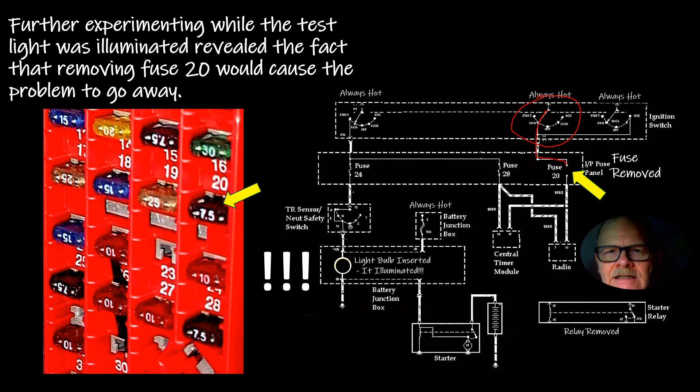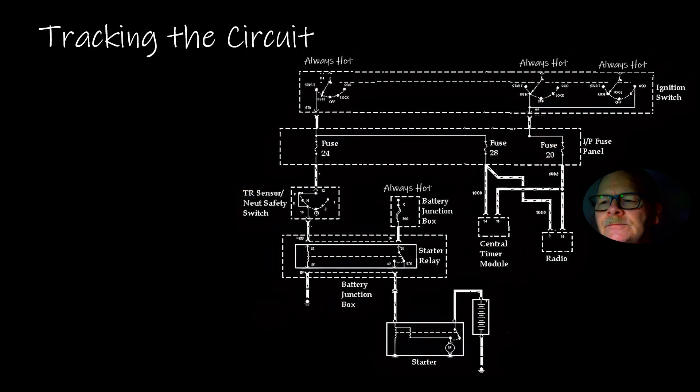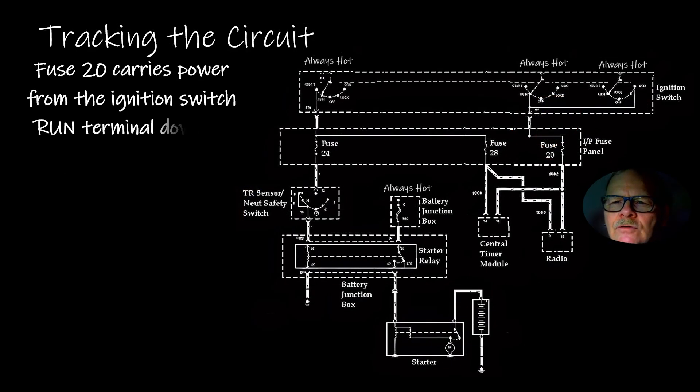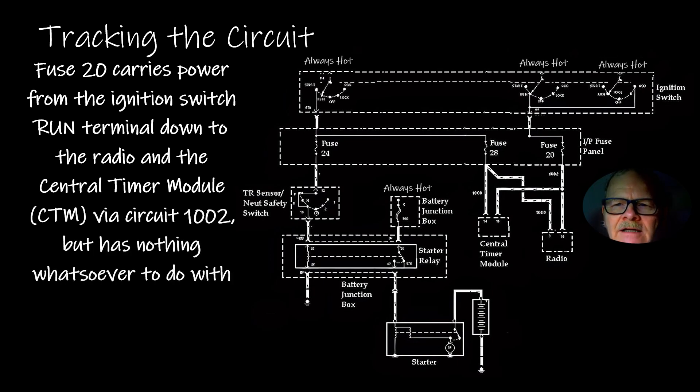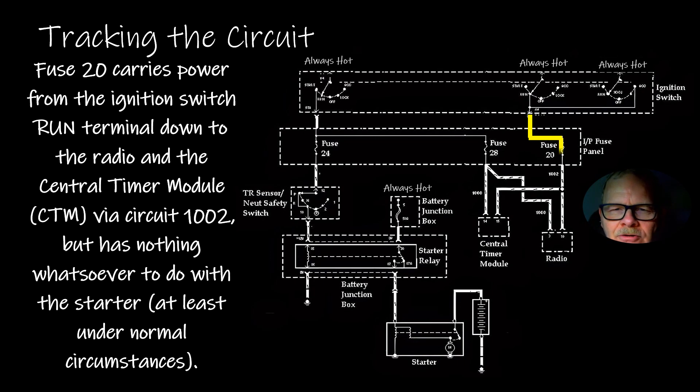Fuse 20 carries power from the switch run terminal down to the radio and central timer module, which is also the GEM module, but the central timer module was a cheaper version that wasn't quite as complicated on the inside.